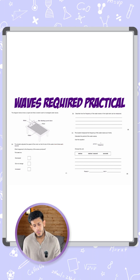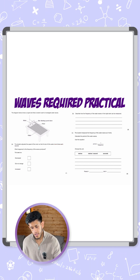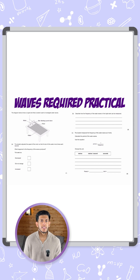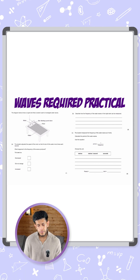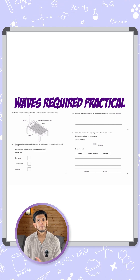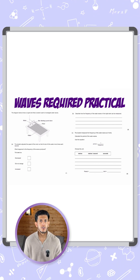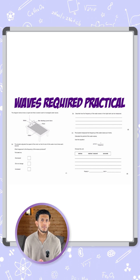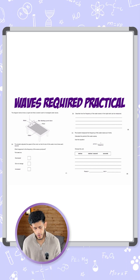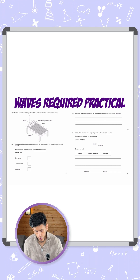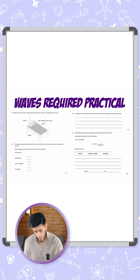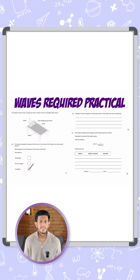What happens to the frequency of the waves produced? If the bar hits the water more times, the waves produced will increase — there'll be more waves per second. Frequency is about how many waves per second there are, so the more waves there are, the greater the frequency. Therefore, increasing the speed of the motor will increase the frequency of the waves.